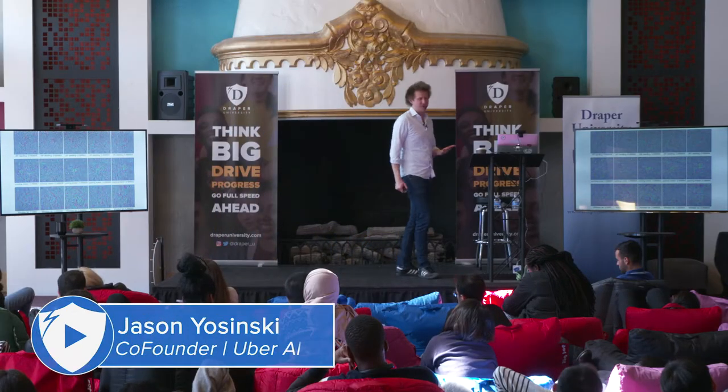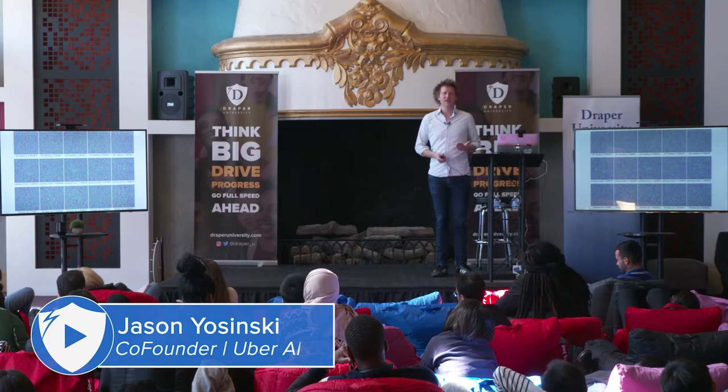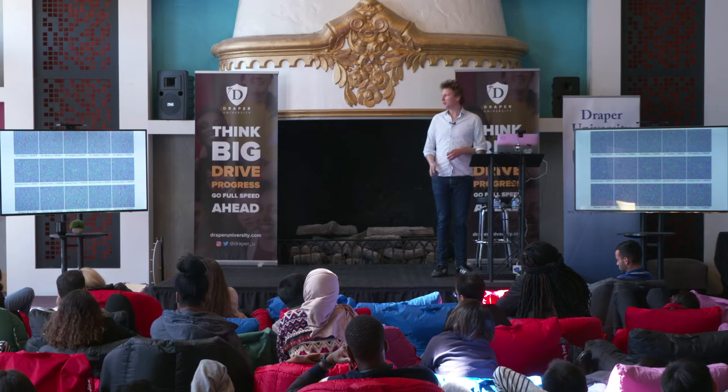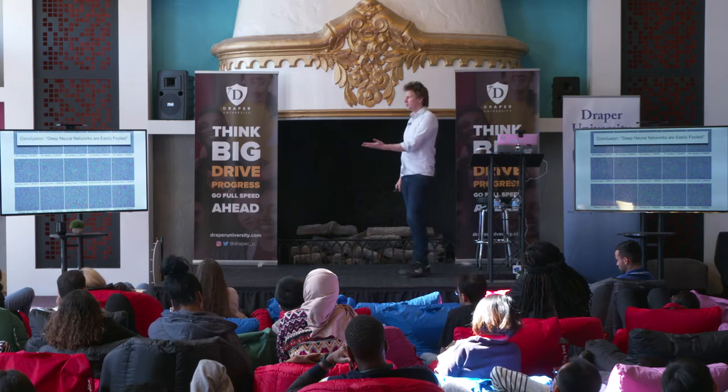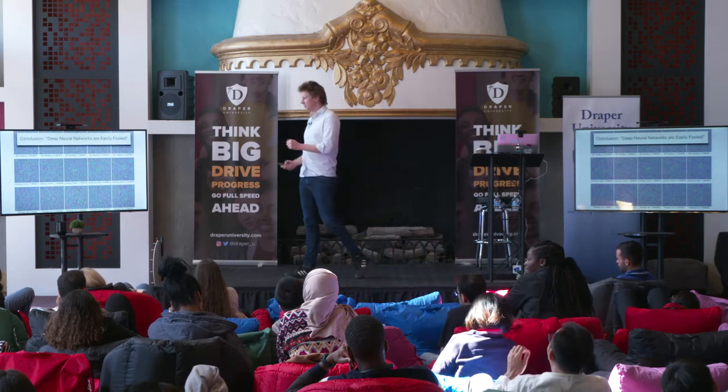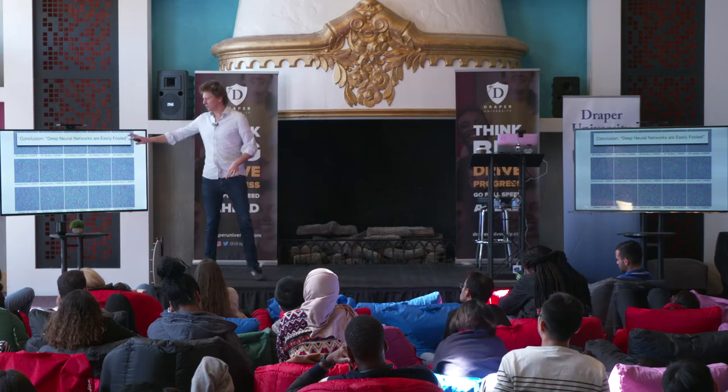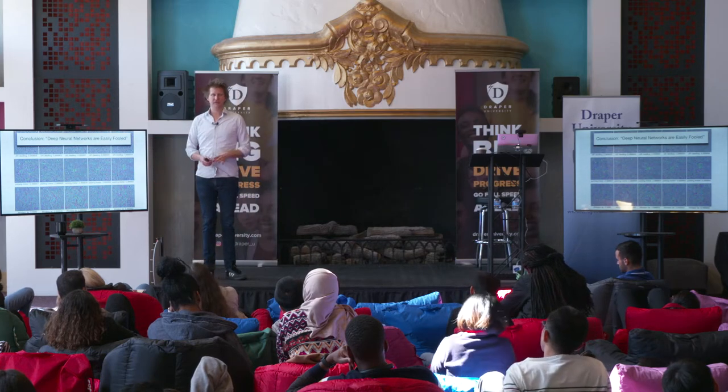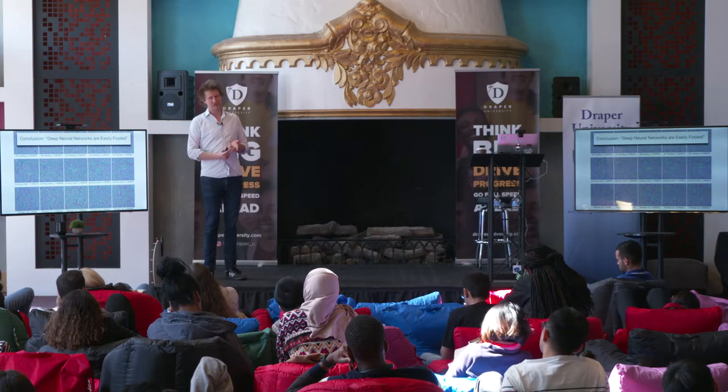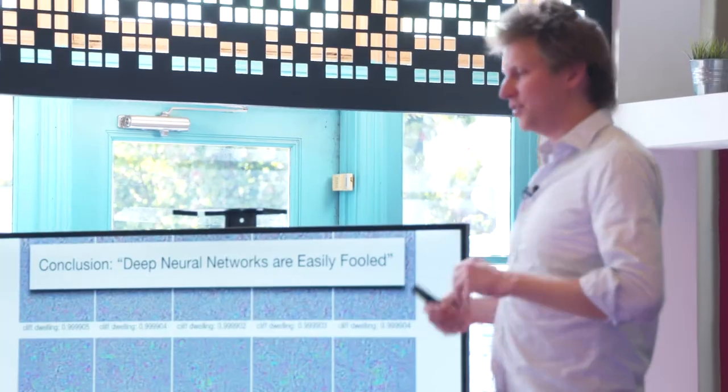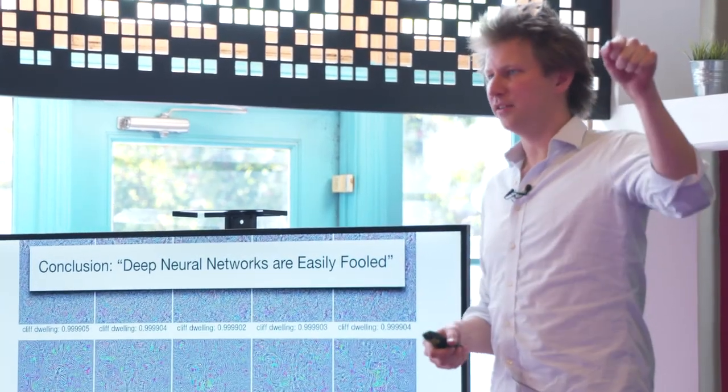We had hoped to generate beautiful pictures of these different classes. In fact, all we found is something completely different and unexpected. Basically, our conclusion was that deep neural networks are easily fooled. It's easy to find these types of crazy pictures, noisy pictures—they're now called fooling examples or adversarial examples—that cause the network to have extreme responses in different ways.